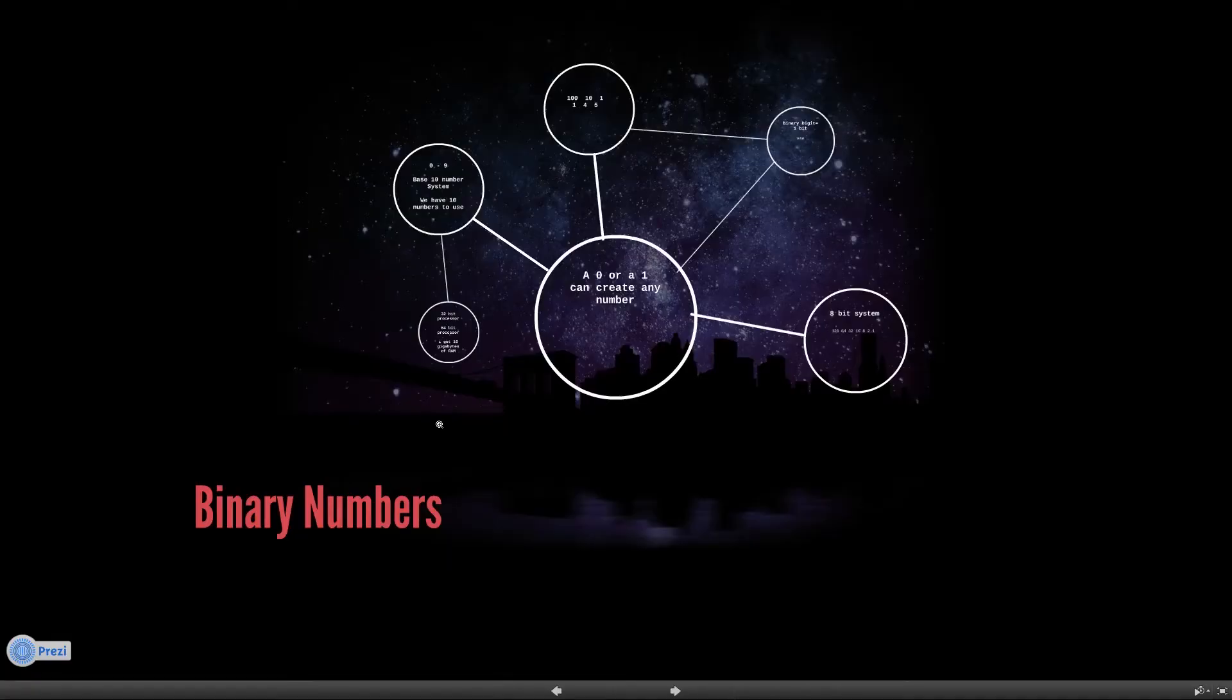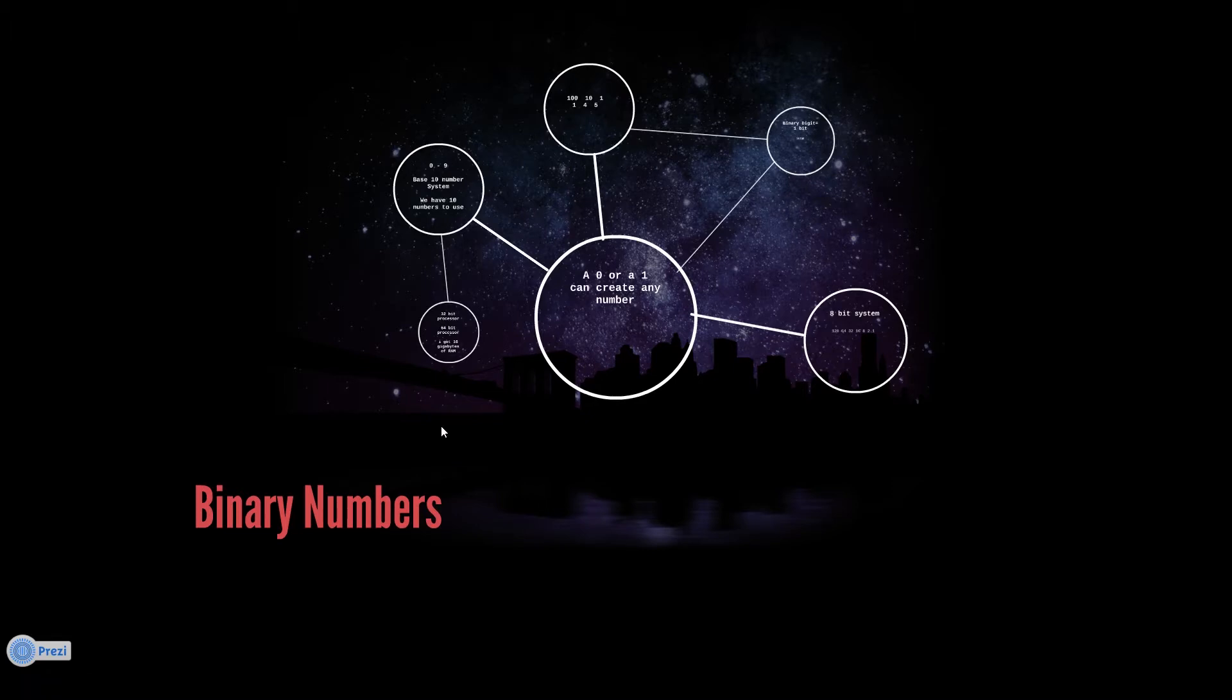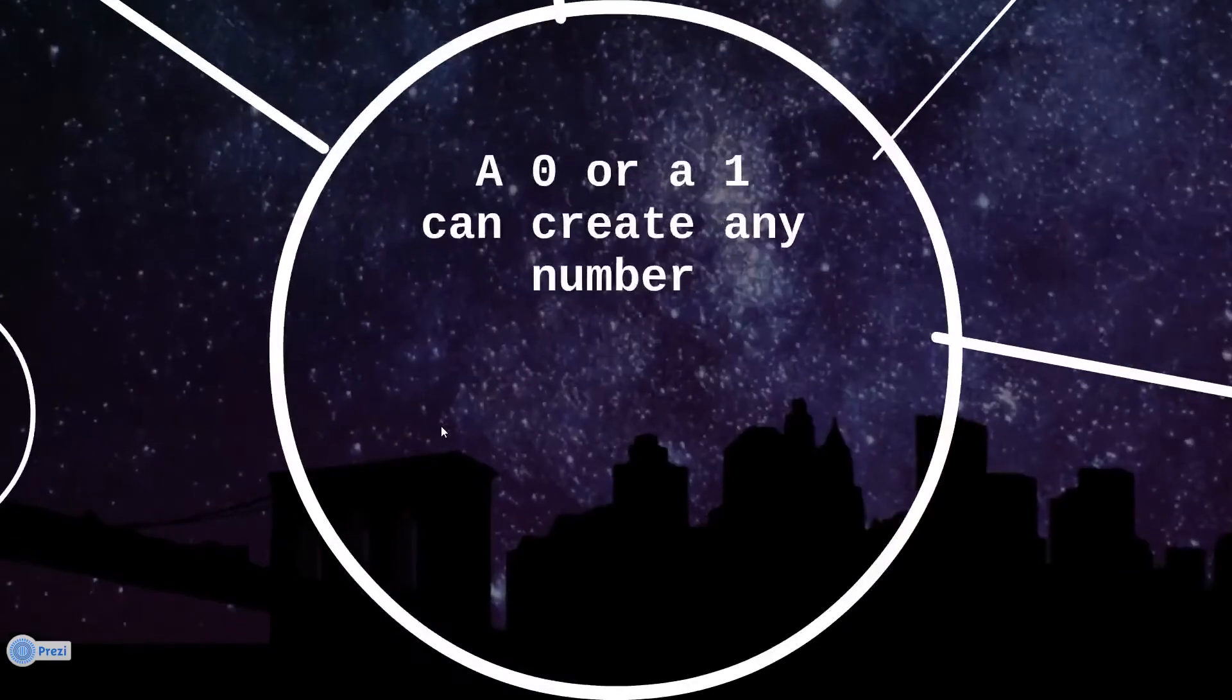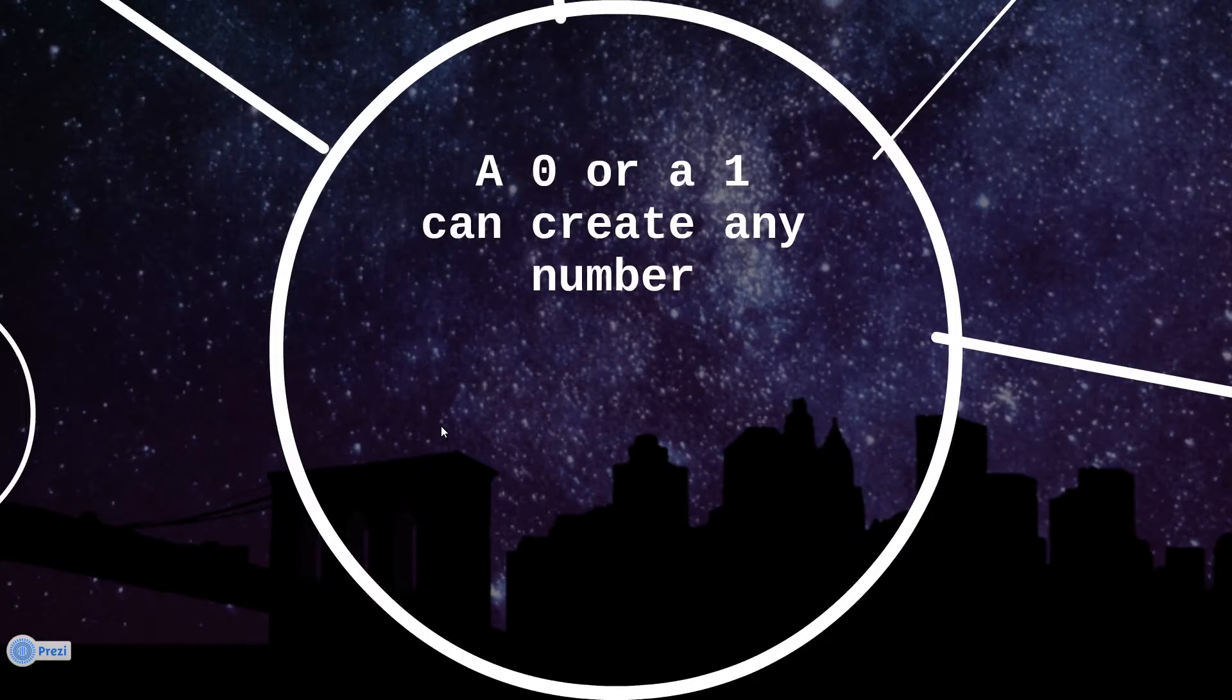Hello and welcome to my second episode of computer science. Today we're going to do binary numbers. As you probably know, binary is a zero or a one. A zero or one can create any number in the world, and it might be really weird how the hell a zero or one could create any number.